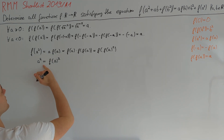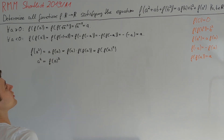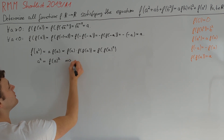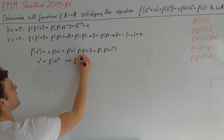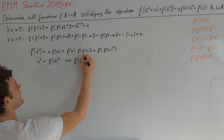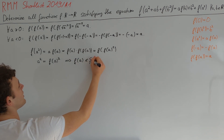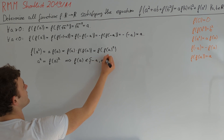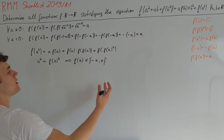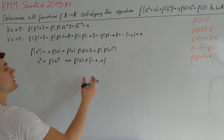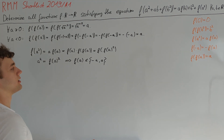We are now in a situation common in functional equation problems: we can deduce that f(a) is always in the set {−a, a}. But we are not done yet — this does not immediately imply that f(x) = x always or f(x) = −x always.